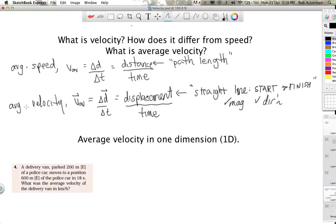Now that you understand what the formula is for average velocity, let's do a simple average velocity calculation in one dimension. This is question number 4 out of your textbook Physics 11 by Addison Wesley, section 1.2. It talks about a delivery van which starts off 200 meters east of a police car, and then the van moves to a position 600 meters east of the police car. The movement takes 18 seconds.